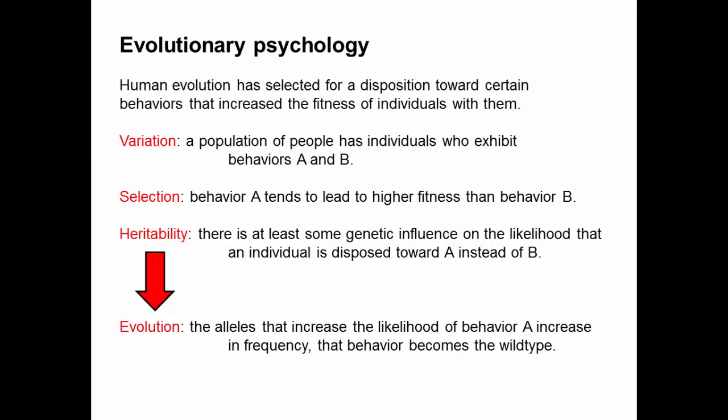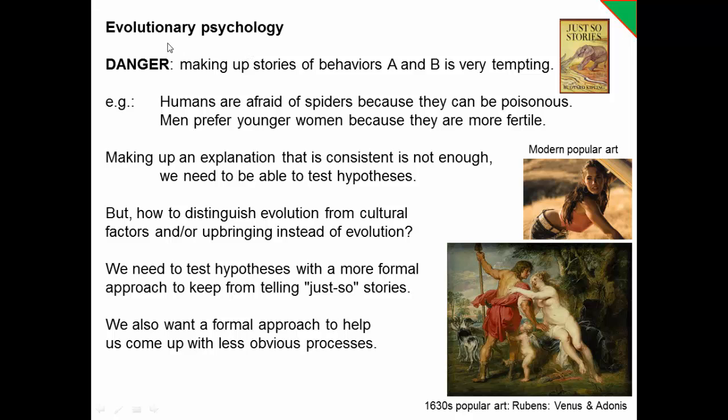Unlike clear discrete traits — like a panda's thumb — this is a little more subtle. It's about having different likelihoods of doing different behaviors.